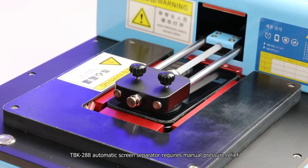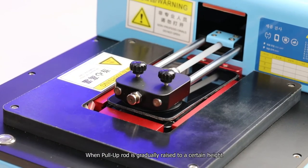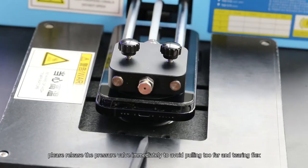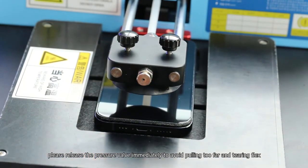TBK288 automatic screen separator requires manual pressure relief. When the pull-up rod is gradually raised to a certain height, please release the pressure valve immediately to avoid pulling too far and tearing the flex cable.